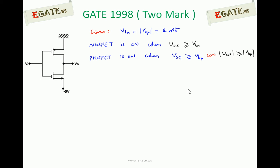The threshold voltage of both transistors is 2 volts. The upper one is P-MOS and the lower one is N-MOS. P-MOS is connected to 0 volts (ground) and N-MOS is connected to minus 5 volts. The threshold voltage of N-MOS (Vtn) is 2 volts and VTP is minus 2 volts in magnitude. N-MOS is on when Vgs ≥ Vtn, and P-MOS is on when Vsg ≥ |Vtp|, since both are enhancement-type MOSFETs.